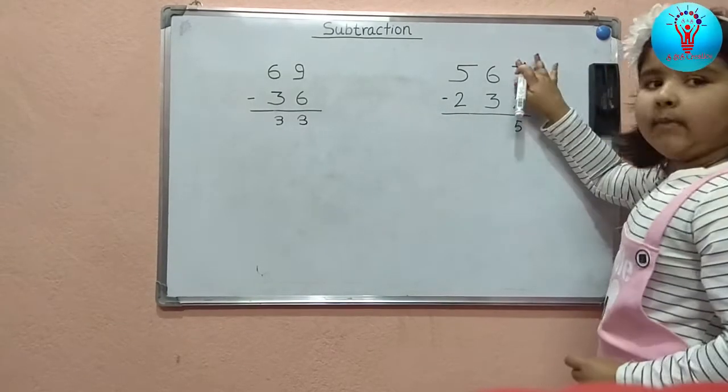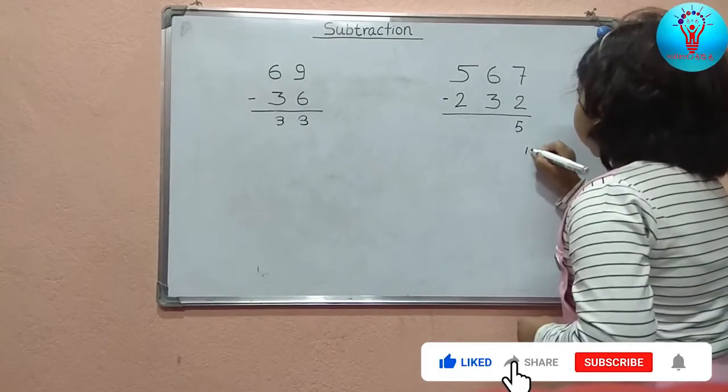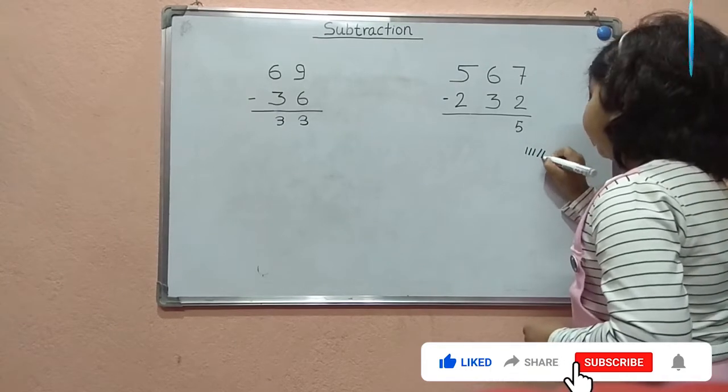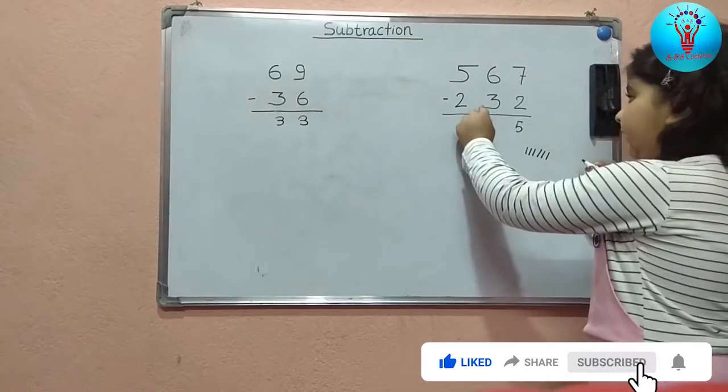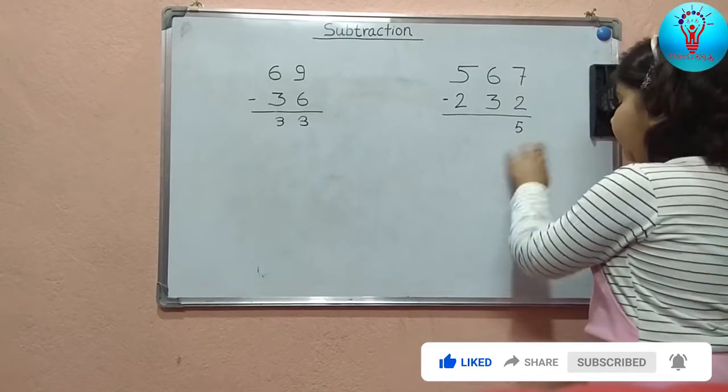And another one. 6 minus 3 is how much? Again, we need to do rough. 1, 2, 3, 4, 5, 6. And how much we need to cut? 3. 1, 2, 3. So the answer is 3.